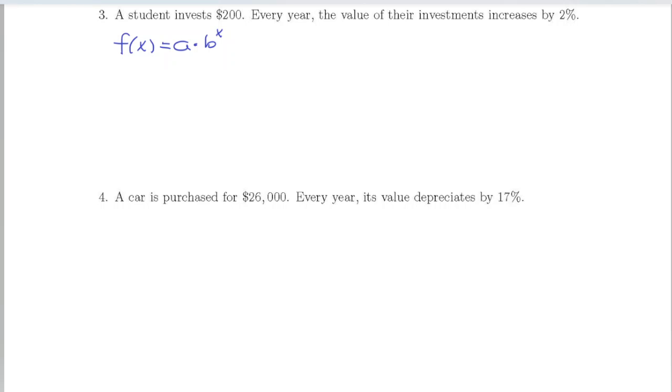If we read our word problem, it says a student invests $200, and every year the value of their investment increases by 2%. We can see pretty easily that our starting amount is going to be this $200, their initial investment. Sometimes the initial investment is also called the principal.